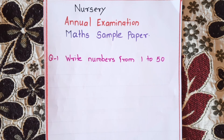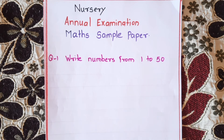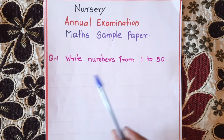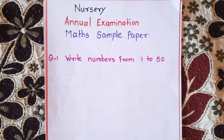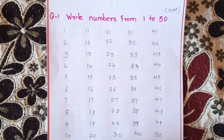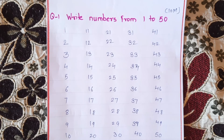If you want to make sure that we come to learn even more than others, it is a very interesting question. First question: write numbers from 1 to 50. This is the first question — 1 to 50 numbers are required.